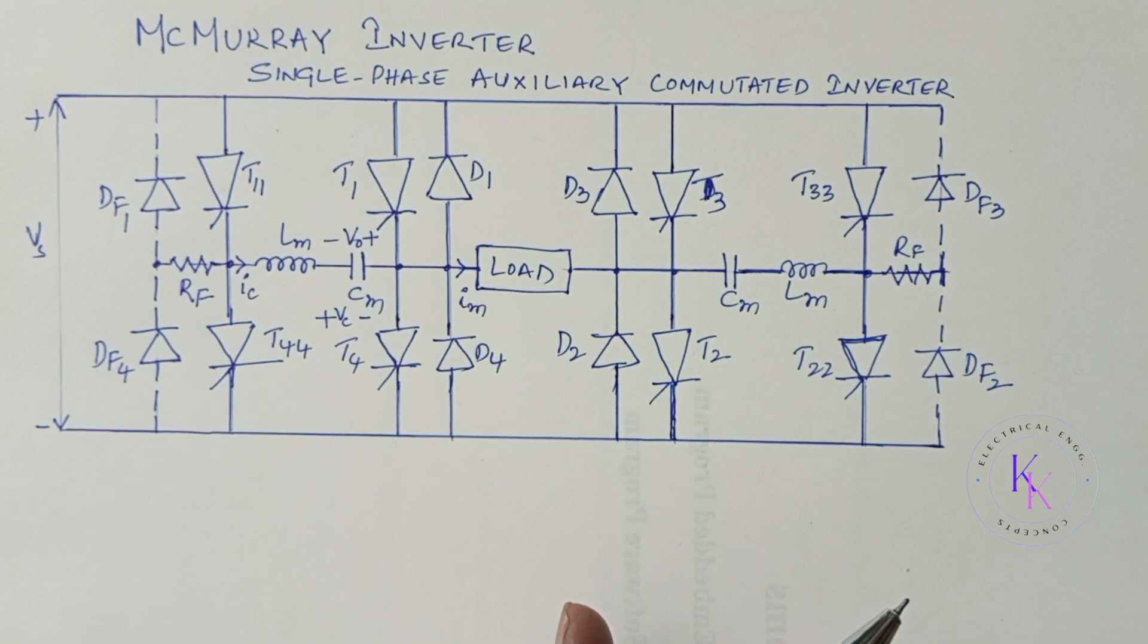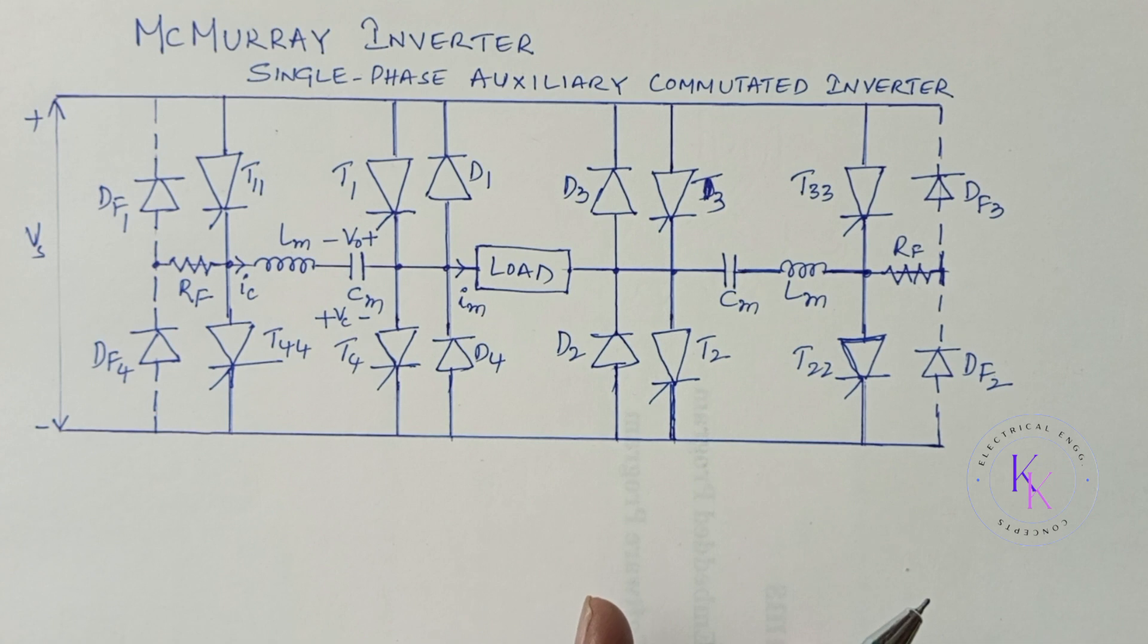It comes under forced commutated thyristor inverters. Although transistors or other devices can be employed as switching devices in inverters, they are used mostly in low and medium power applications. For high voltages and high current applications, it is necessary to connect them in series and or in parallel combinations, and this results in an increased complexity of the circuit.